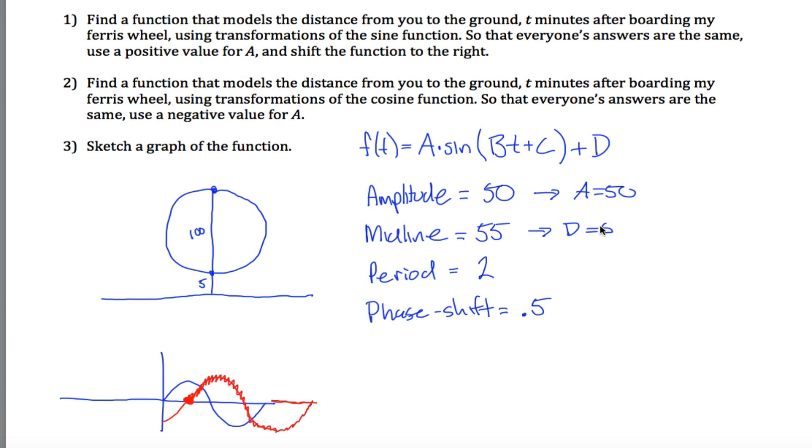The midline, there's no ambiguity about it. It automatically tells you that D equals 55.